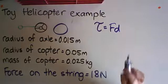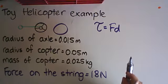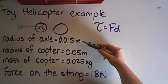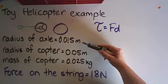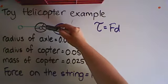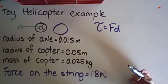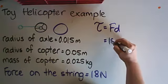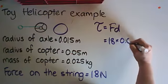It's disguised—you might not immediately spot it, though I hope you have—it's here, the radius of the axle. The 18 newtons of force is being applied here at the string, offset by the distance, the radius of the axle. That's our d in this case. So 18 times 0.015.